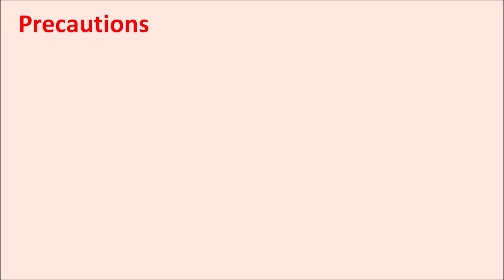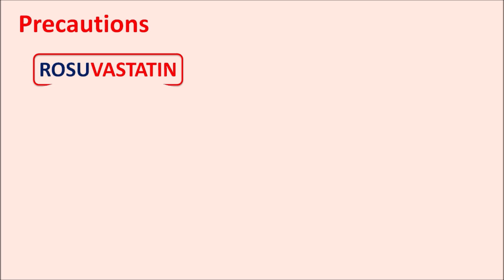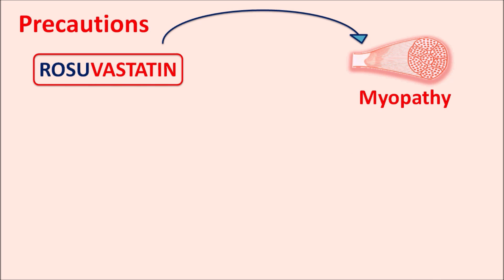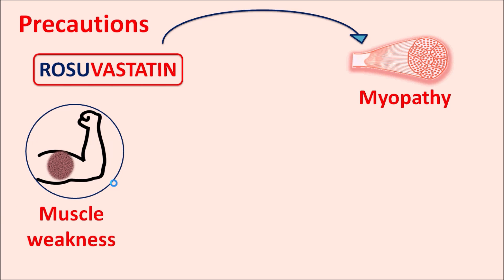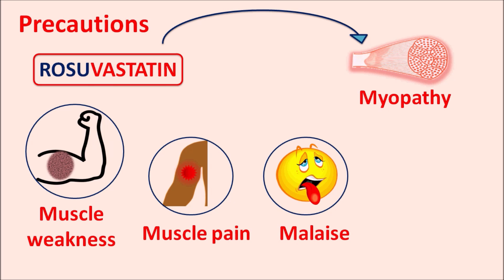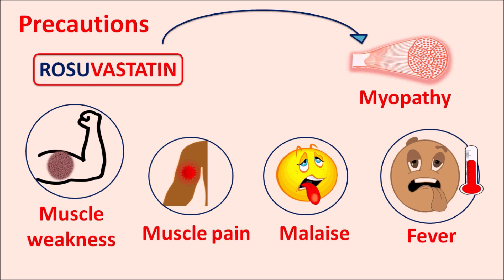One of the important precautions of rosuvastatin concerns skeletal muscle. This drug can affect skeletal muscle, resulting in myopathy — damage to the muscle. It can produce muscle weakness, muscle pain, malaise, feeling of discomfort, and fever in patients. This myopathy is increased with higher doses and longer duration of treatment.